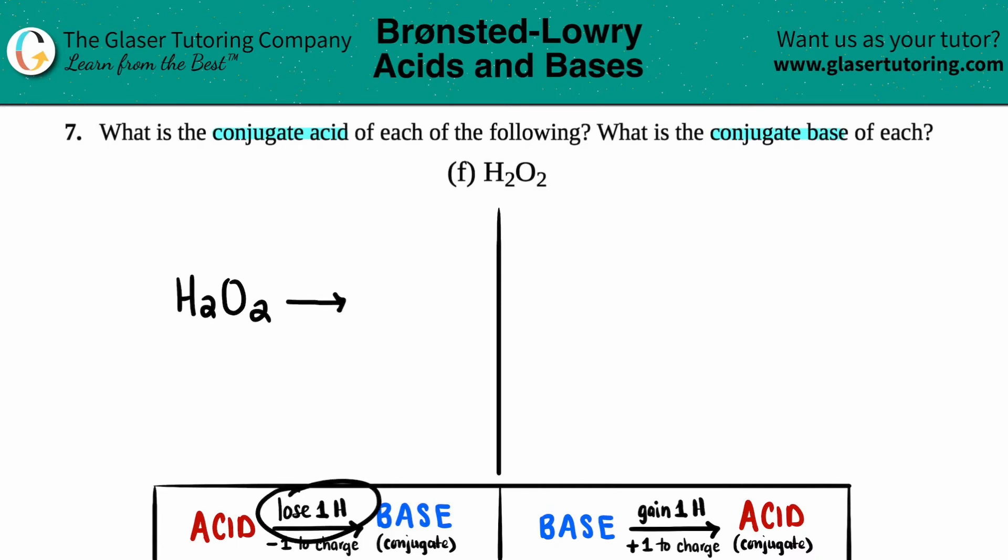is always going to be one hydrogen less than its acid. So you're always going to lose one hydrogen. So in this case, my hydrogen peroxide, I have two hydrogens. So kick one of them out, right? Goodbye. One goes. So now I'm just left with one hydrogen, but the rest stays. So now it's HO2.